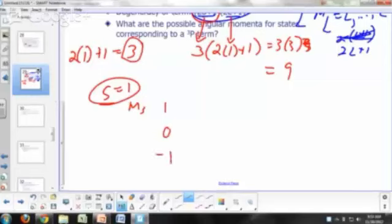What are the possible values of M sub L? If L equals 1, what are our possible M sub L? It's going to be 1, 0, or negative 1.